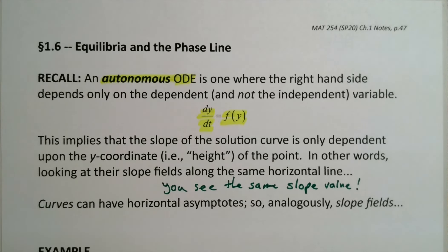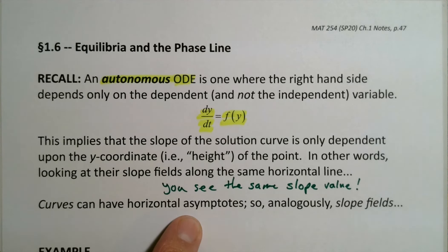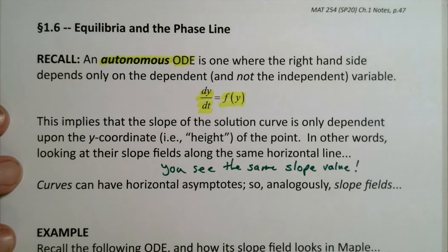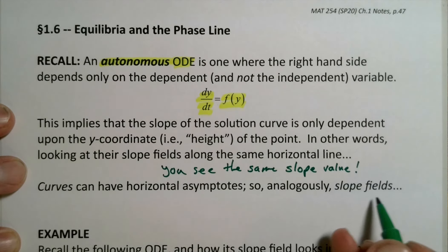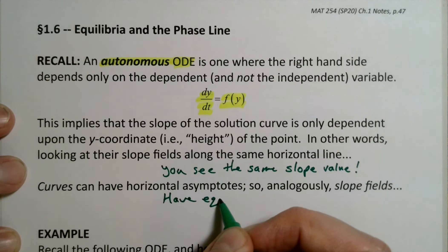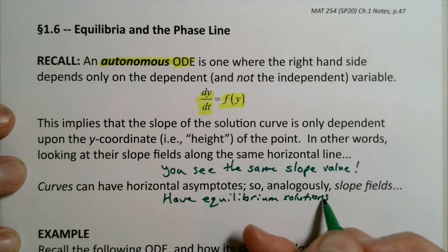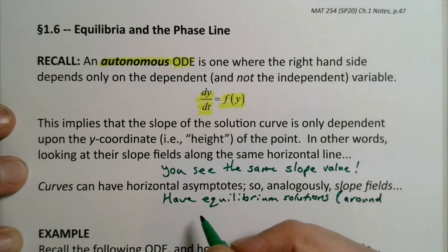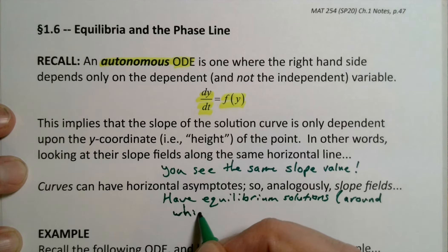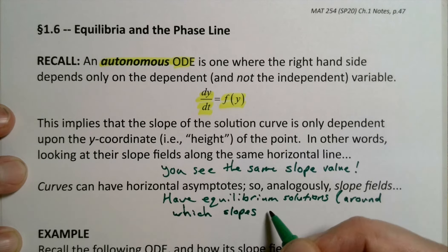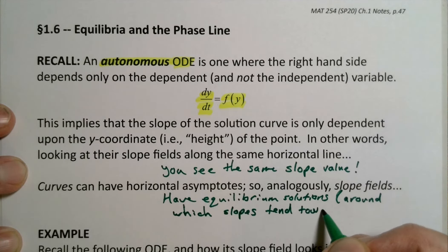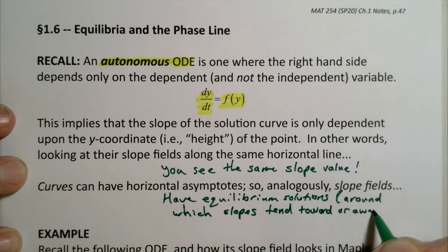If you remember from pre-calculus, curves might have something called a horizontal asymptote — the graph of 1/x has a horizontal asymptote. The analog for slope fields is not an asymptote; it's what we're calling equilibrium solutions. Slope fields have equilibrium solutions around which the slopes tend toward or away from zero.